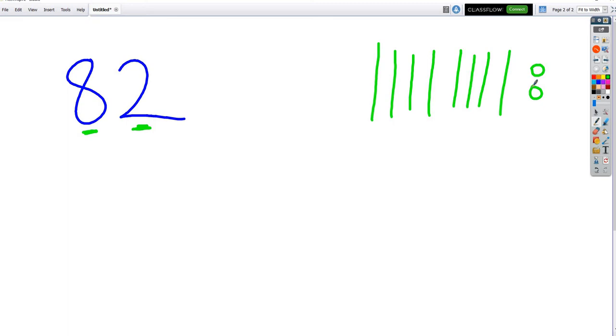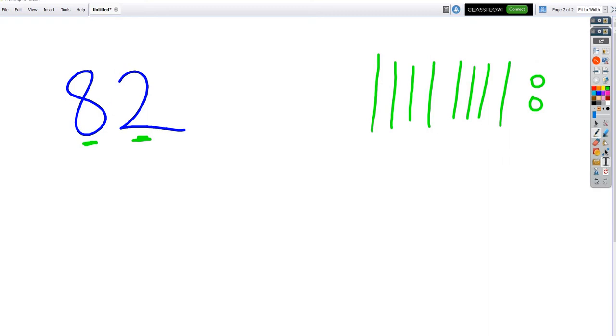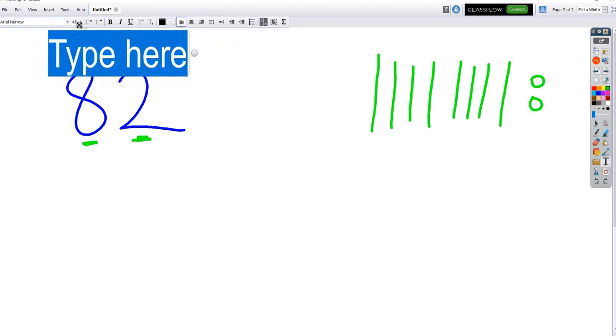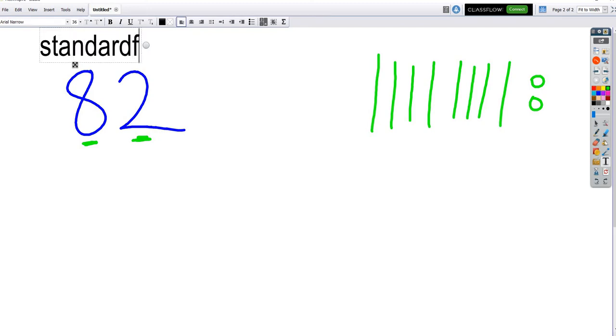And these have names. So I'm going to click up here, and I'm actually going to type it. So we don't lose it. Not that big. Let's go a little smaller. That's good, probably. The name for when you just write a number with just numbers is called standard. Standard form.